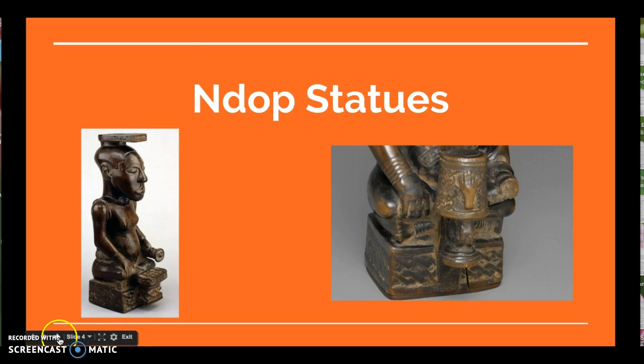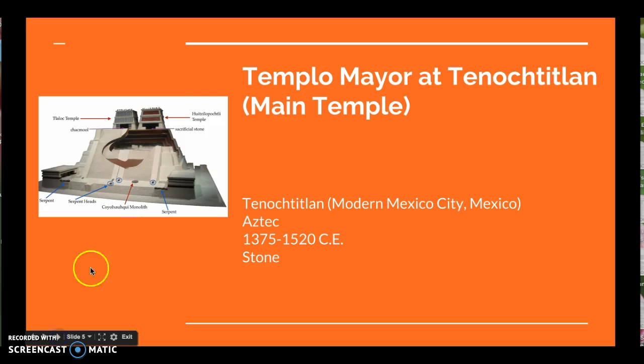Now let's move on to our second piece of art. Our second piece is the Templo Mayor, and today we'll be focusing on the main temple. It's located in Tenochtitlan, which is modern-day Mexico City, and was built by the Aztec Empire. It's made out of stone and was constructed between 1375 and 1520 CE.